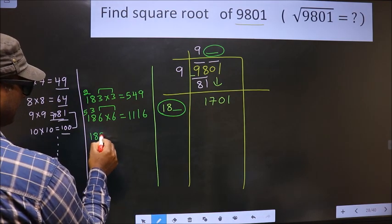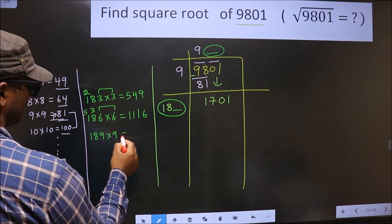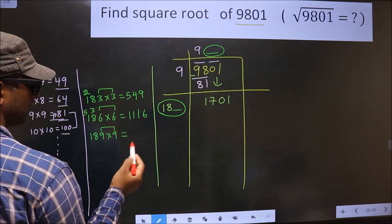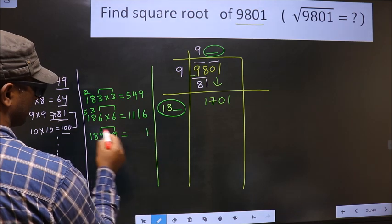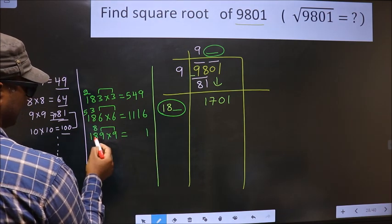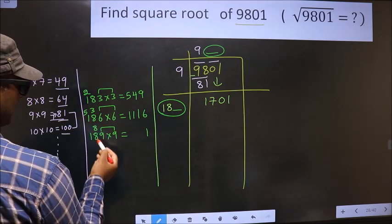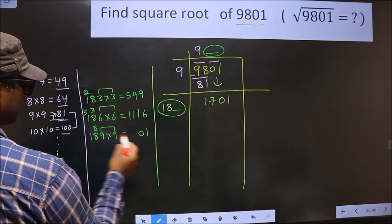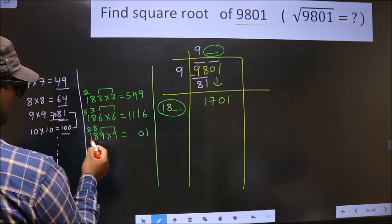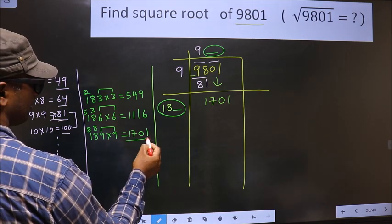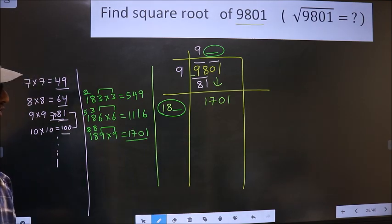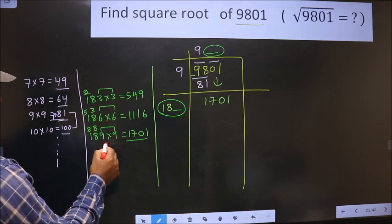So if we take 9, these two numbers should be same. 9 into 9, 81. So 1, 8; 9 into 8, 72 plus 8 is 80. So 0, 8; 9 once, 9 plus 8 is 17. We got exact 1701 for the number 9.